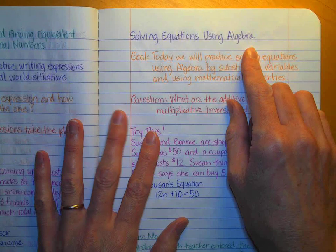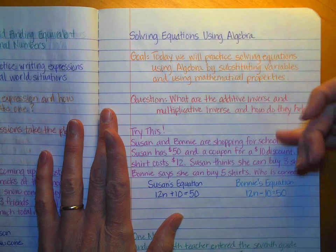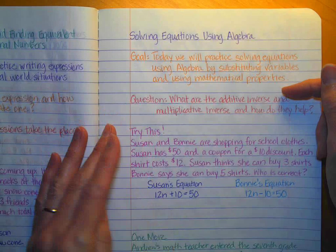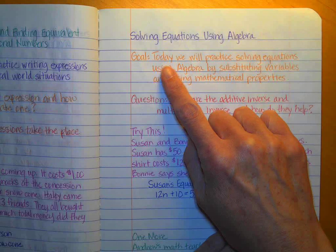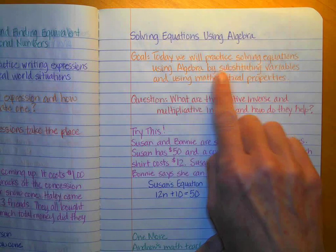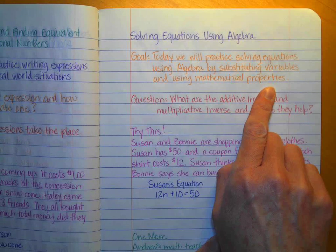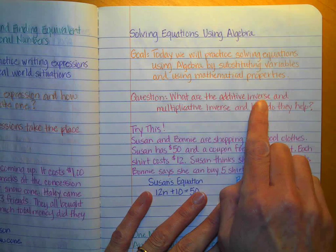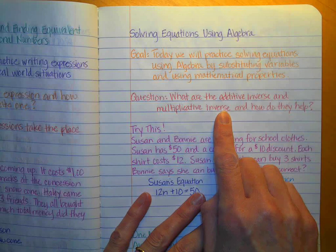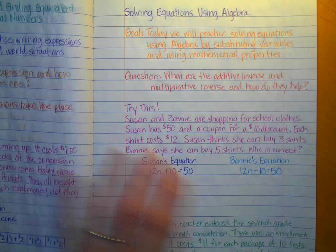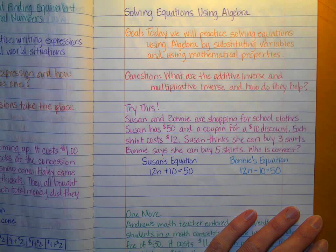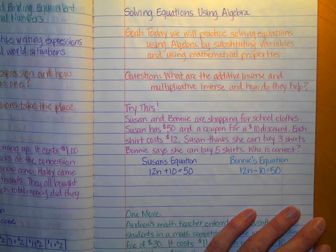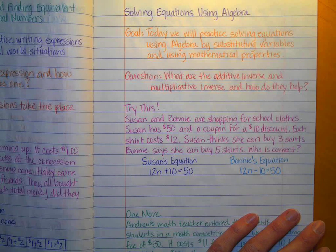This is really fun. It's a lot like yesterday's lesson in the sense that you are going to have to read the problem and then figure out how to find the answer. Our goal is: today we will practice solving equations using algebra by substituting variables and using mathematical properties. The question to be thinking about is: what are the additive inverse and multiplicative inverse, and how do they help? By the end of this lesson you need to know what an additive inverse and multiplicative inverse are, because knowing that is really pertinent to solving equations using algebra.